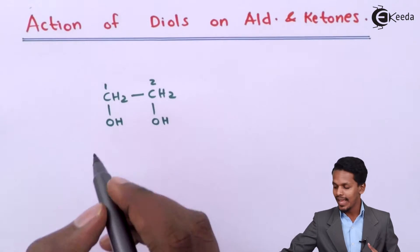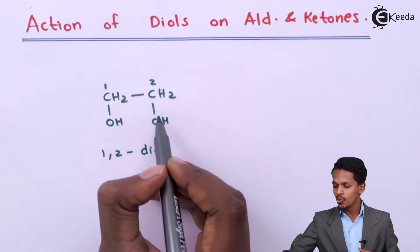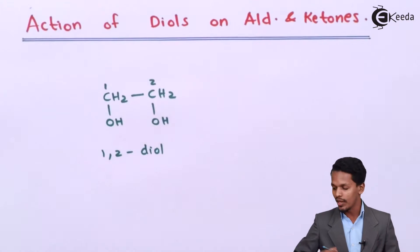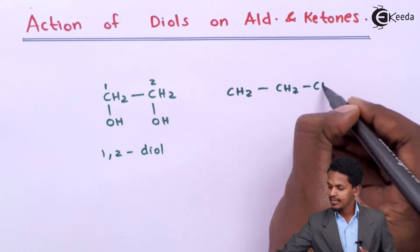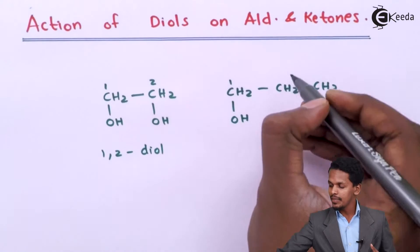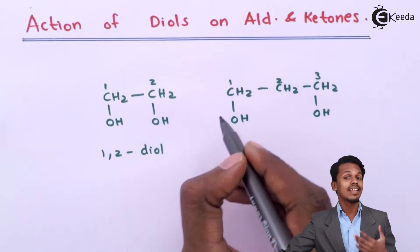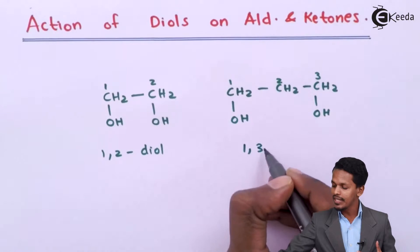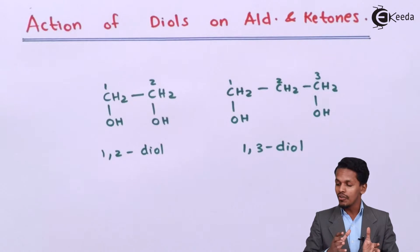This is known as a 1,2-diol because the OH groups are attached to the first and second carbon atoms. The other diol we are going to talk about is the 1,3-diol, where the OH group is attached to the first carbon atom and also to the third carbon atom, hence it is called a 1,3-diol.